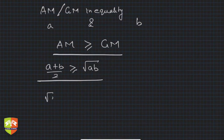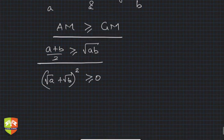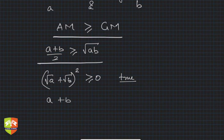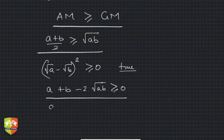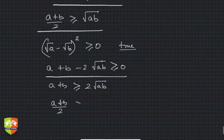How can you prove this? The square of any number is greater than or equal to zero. So (√a - √b)² ≥ 0 is always true — it's a square, so it's always ≥ 0. Open the brackets: you get a + b - 2√(ab) ≥ 0, which means a + b ≥ 2√(ab), and therefore (a + b)/2 ≥ √(ab) always.